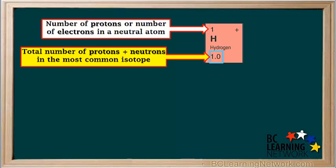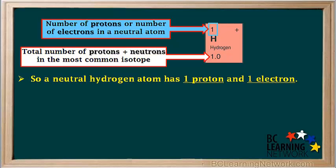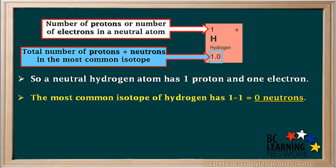The number below the element symbol on the periodic table is called the atomic mass. When rounded to a whole number, it is generally equal to the total number of protons plus neutrons in the most common form, or isotope, of the element. From the atomic number, we can see that every atom of hydrogen has one proton and a neutral atom of hydrogen has one electron. Using hydrogen's atomic mass, we can see that the total number of protons and neutrons is equal to one. Since hydrogen has one proton, it will have one minus one equals zero neutrons.